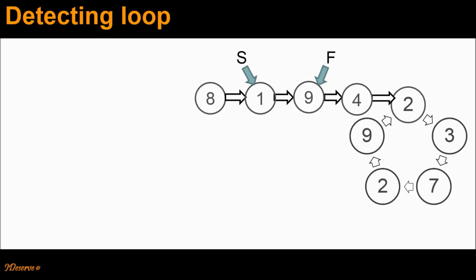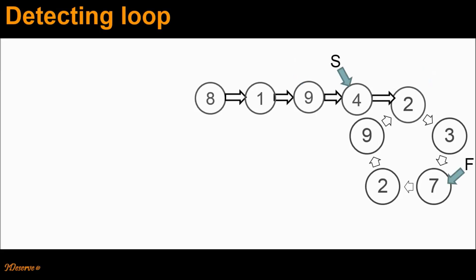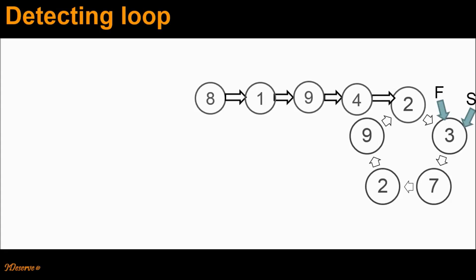We again advance S by one node and F by two nodes. They are not pointing to the same node. We repeat this step. Now S points to 4 and F points to 7. We repeat this step again — they are not pointing to the same node. We again repeat this step. Now at this point, both S and F pointers are pointing to the same node 3.